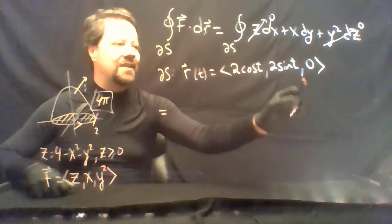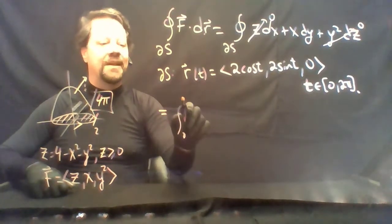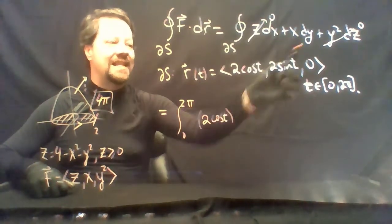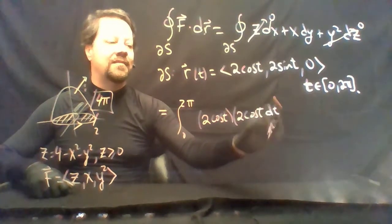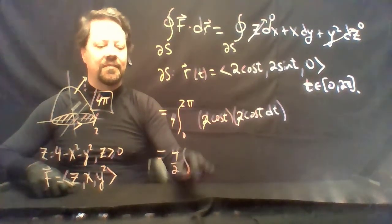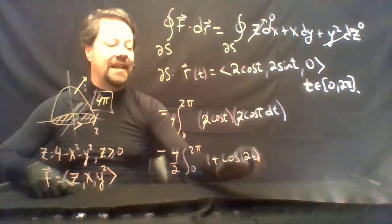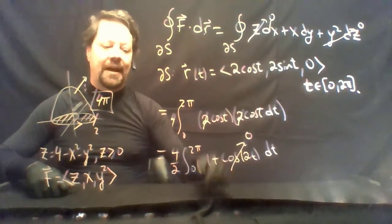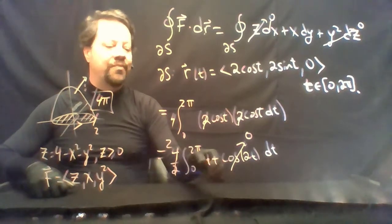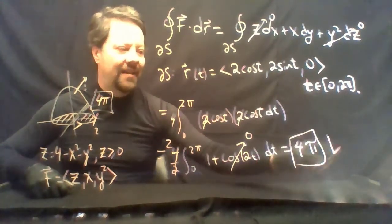The answer is obviously 4π, but let's verify. With t from 0 to 2π, the integral becomes the integral from 0 to 2π of x times dy. We get a factor of 4 out front, then cos²t. Using cos²t = ½(1 + cos2t), integrating cos(2t) over two periods gives zero. We end up with 2 times the length of the interval times 1, which is 4π. That's the big check — the line integral on the left equals the surface integral on the right.